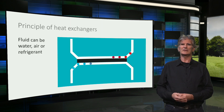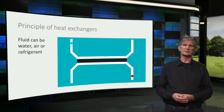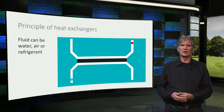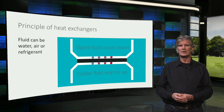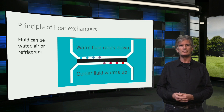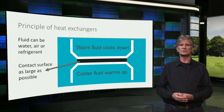What is a heat exchanger and how does it work? This scheme illustrates the general principle of a heat exchanger. Heat is transferred from one fluid — a liquid like water or a gas like air — to another fluid, without the two fluids being in direct contact. The warm fluid cools down while the colder fluid warms up. To facilitate a good heat exchange, the contact surface is increased as much as possible.